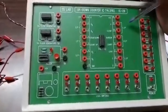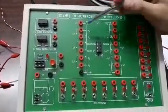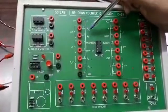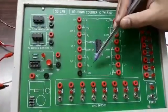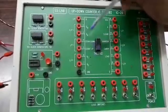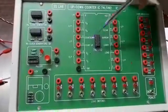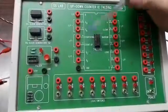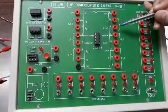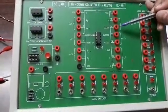The connections required to view up count or down count include outputs QA, QB, QC, and QD. There are two inputs, either count down or count up - at a time we can see only one operation. Other inputs required are clear input and load input.